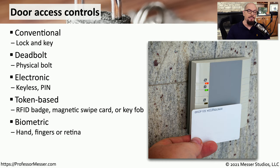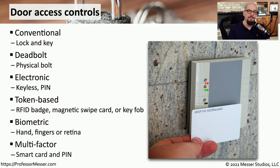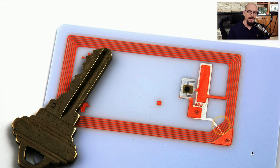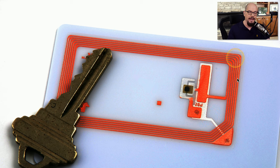We've already seen that biometrics can be used for door locks, especially hand prints or fingerprints. In some cases, you might even use a smart card with a personal identification number to gain access through a locked door. Here's the inside of one of those RFID badges — you can see the antenna around the outside that receives power for the RFID and is able to send and receive signals, and on the inside is the RFID chip itself.